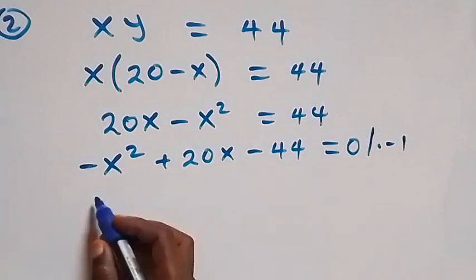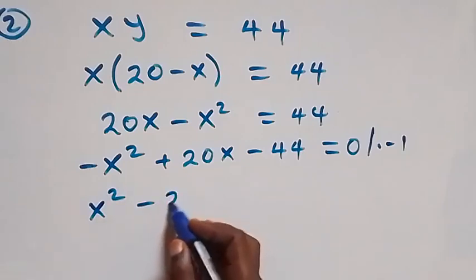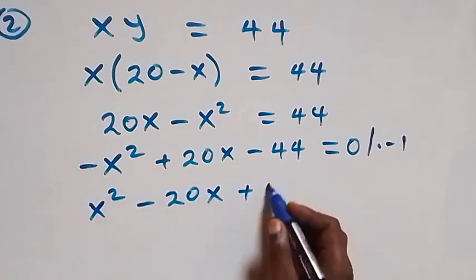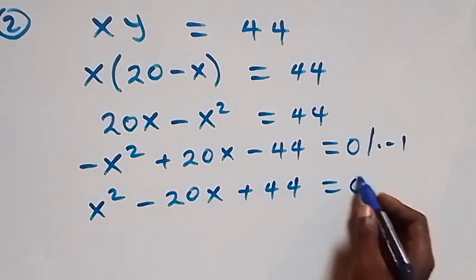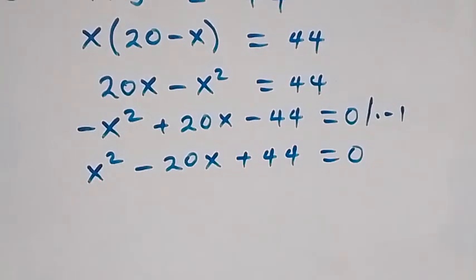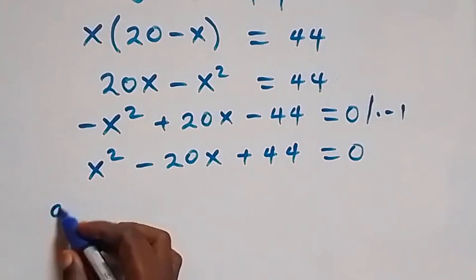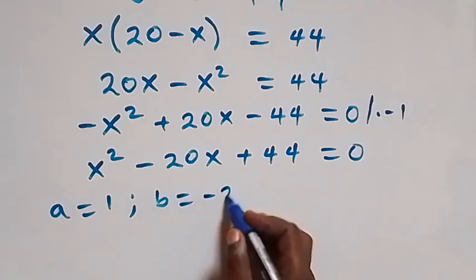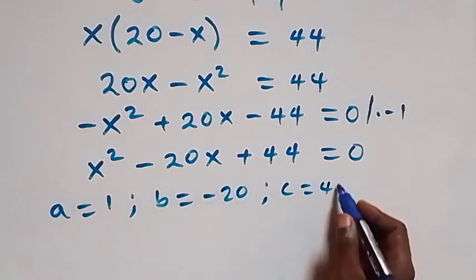That gives us x squared minus 20x plus 44 equals to 0. From here we have a quadratic equation where a equals to 1, b equals to minus 20, and c equals to 44.